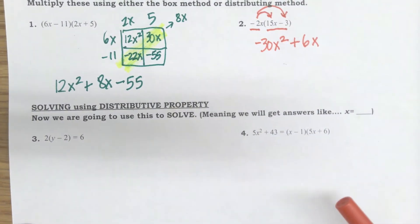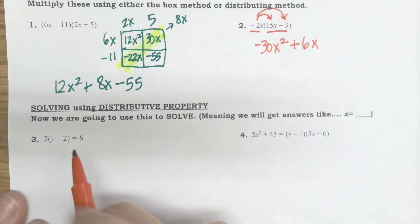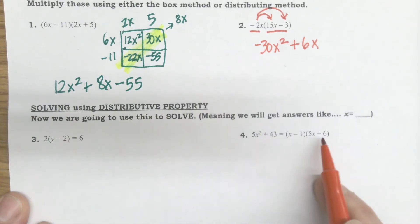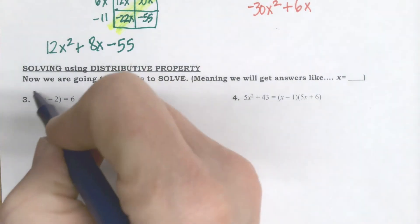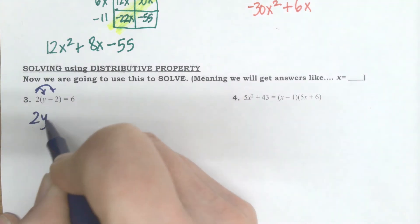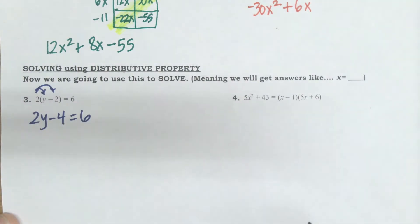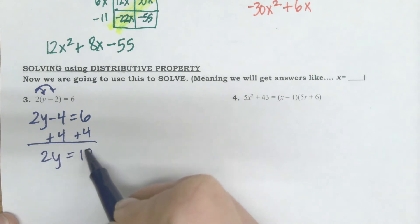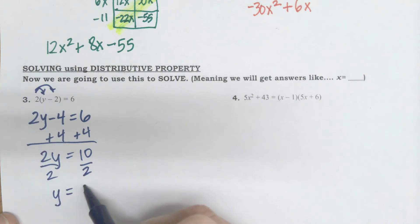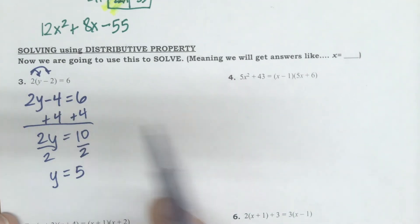So we're going to be doing some solving. Meaning I either have to distribute, or in the case of problem number four, I may have to do the box method to clean it up before I can solve. So for number three, because it's just those two terms, I'm going to distribute. So two y minus four equals six. To solve, I'm going to add four on both sides and divide by two on both sides. Just normal solving. I just had to do the distributive property first.